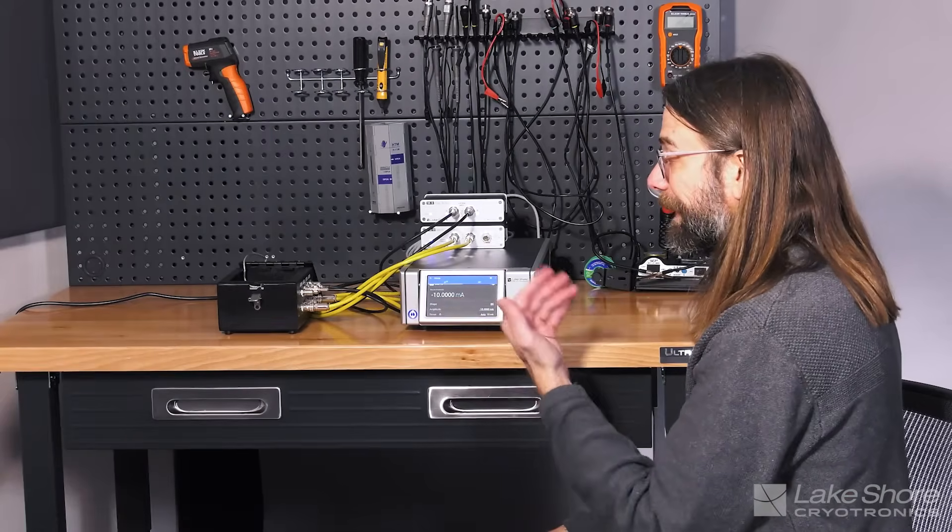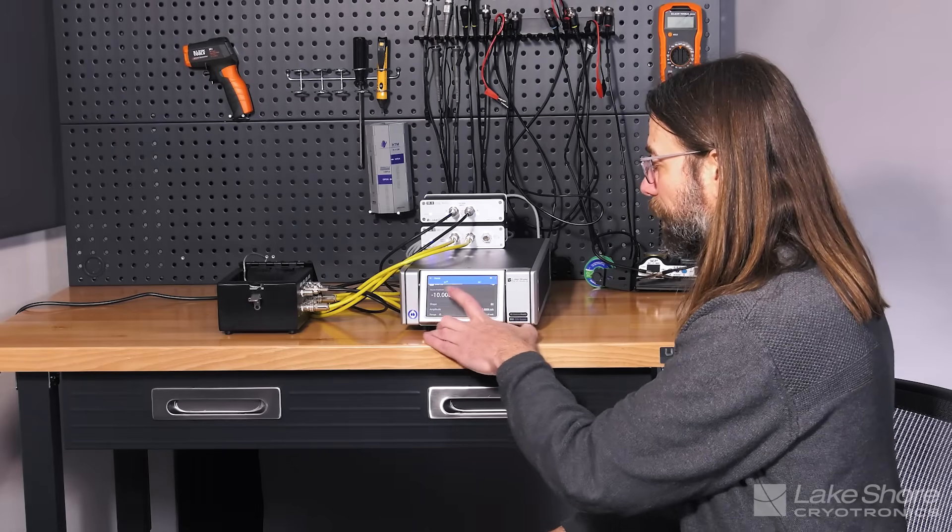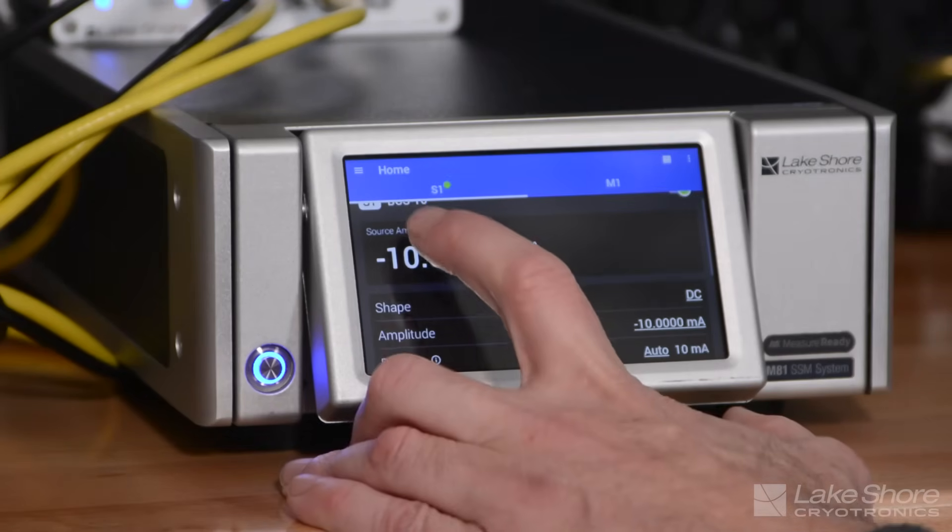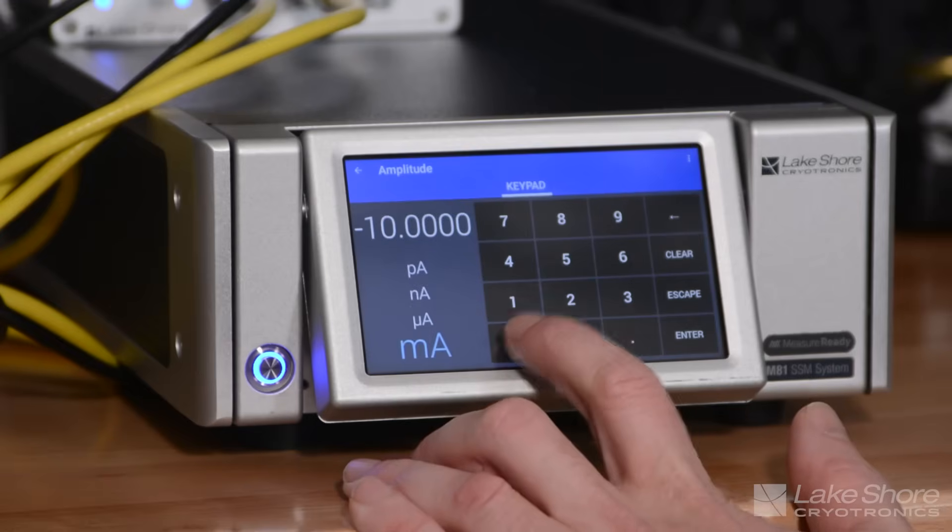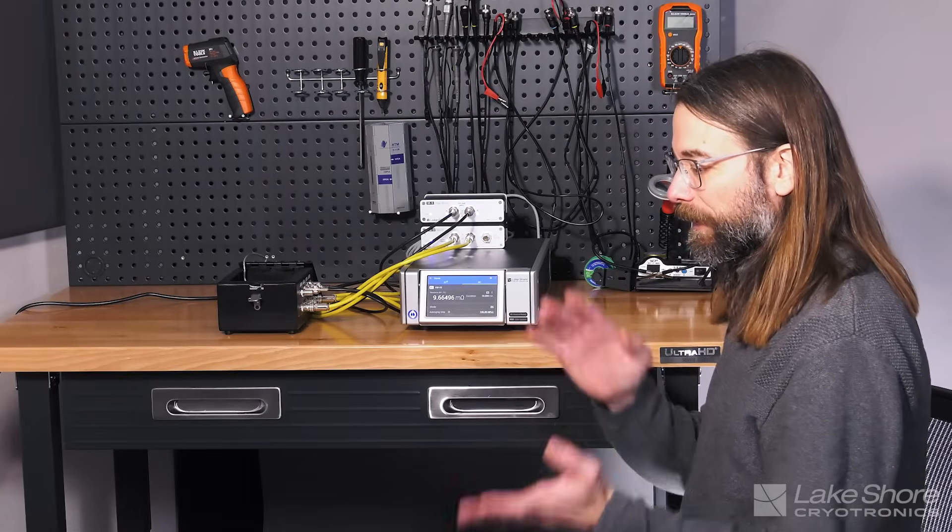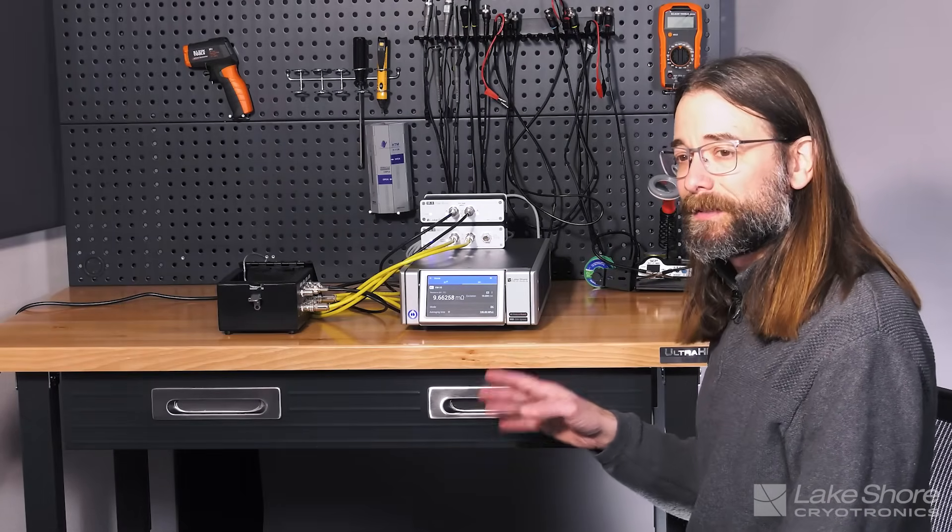So in this case, we're making a DC measurement on this device. So now we're reading 10.3 milliohms. And remember, in the positive direction, we were reading 9.6. And so I'm just going to switch back to the positive direction. 9.6. So we do have a discrepancy in the positive and the negative direction when we're sourcing a DC current.